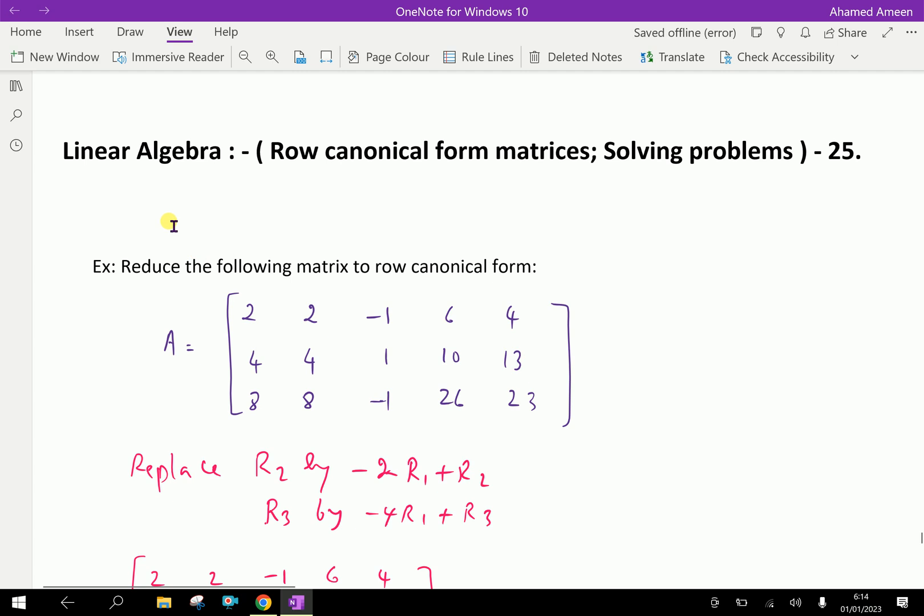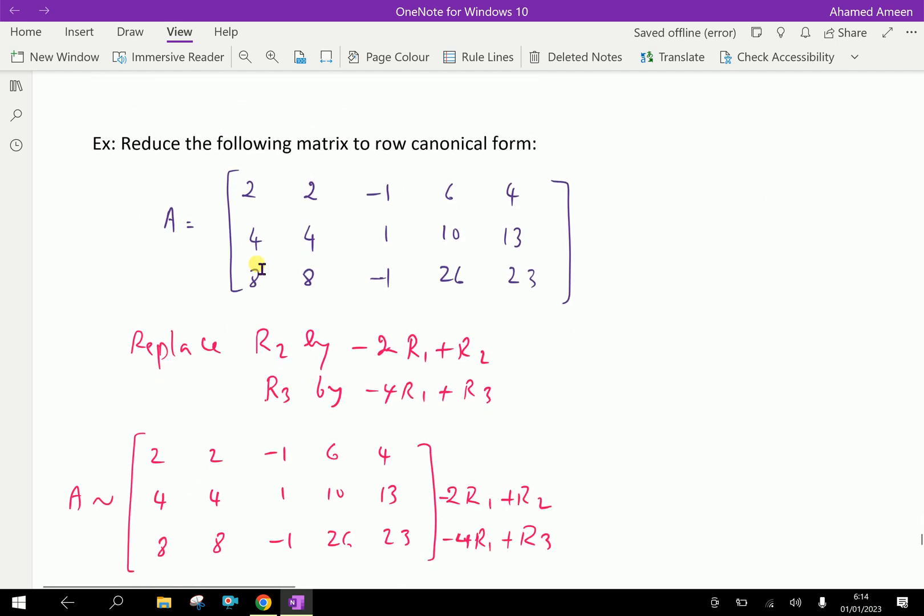Welcome to aminacademy.com. In linear algebra, let us discuss about one example problem regarding row canonical form matrices. Look at this example. Reduce the following matrix to row canonical form. The matrix A is given here, 3 by 5 order.